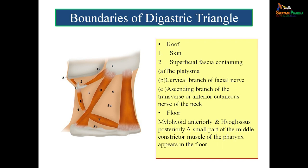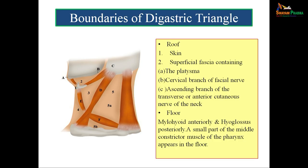The roof of the digastric triangle is formed by skin and superficial fascia. This superficial fascia contains the platysma muscle, which is a subcutaneous muscle and part of the panniculus carnosus. The cervical branch of the facial nerve supplies the platysma. The ascending branch of the transverse or anterior cutaneous nerve of the neck also lies in the roof. The floor is formed anteriorly by the mylohyoid muscle and posteriorly by the hyoglossus.